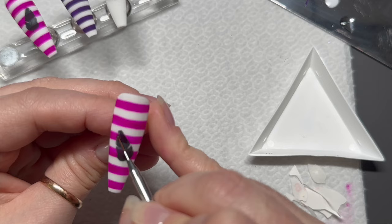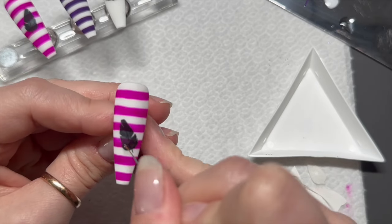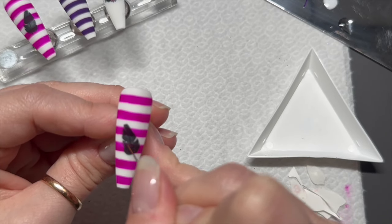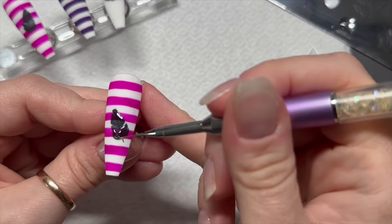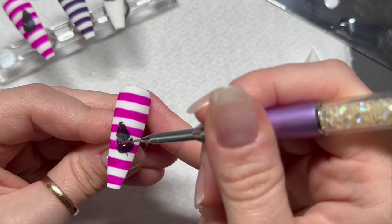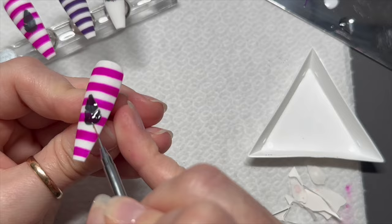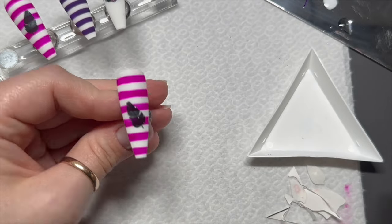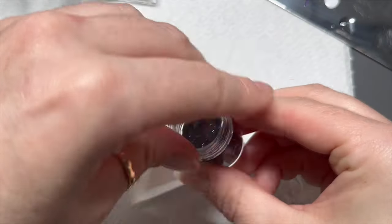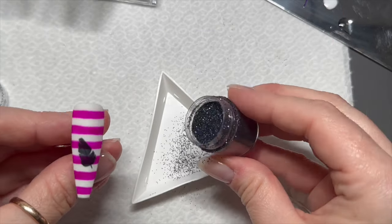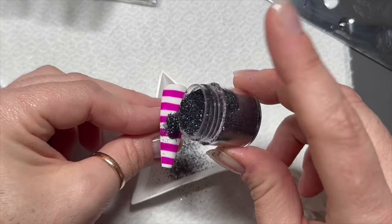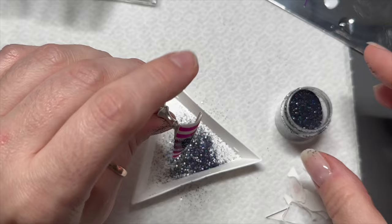I'm going over this feather with the no-wipe top coat. You have to be really careful not to go over the—you see where the feather separates? You have to be really careful not to let your top coat go over the split in the feather, otherwise it won't look like a feather.